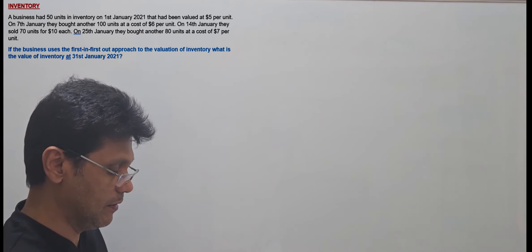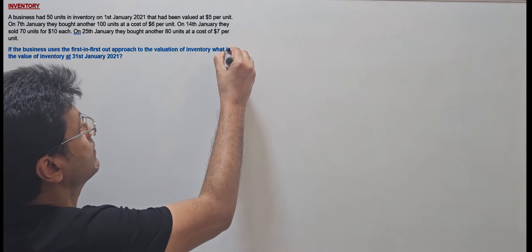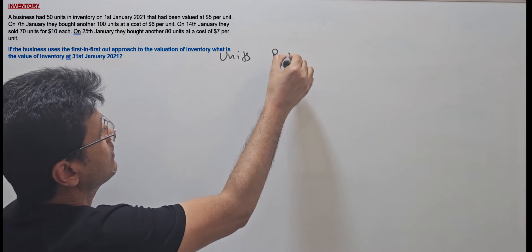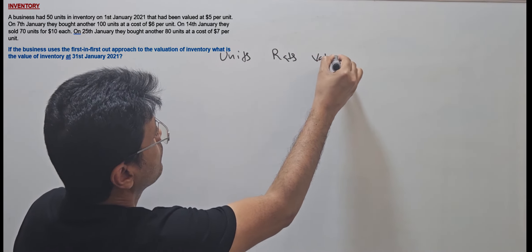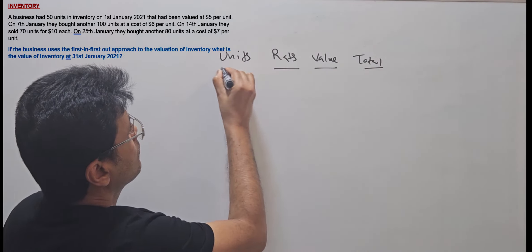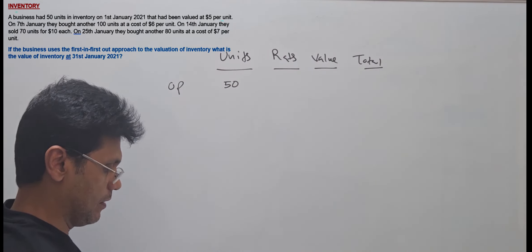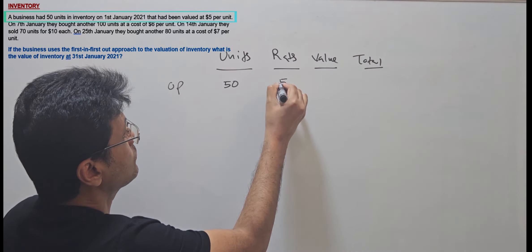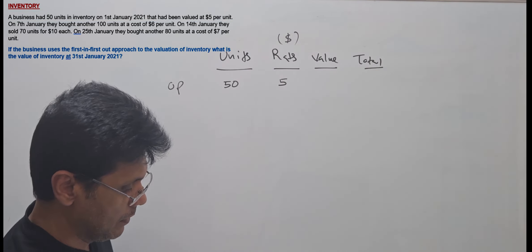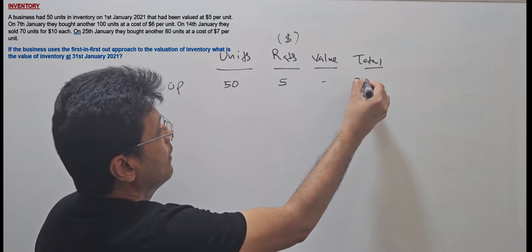Let's take the opening units. We'll set up columns for units, rates, value, and total value. The opening balance is 50 units, valued at $5 per unit, giving a total opening balance of $250.